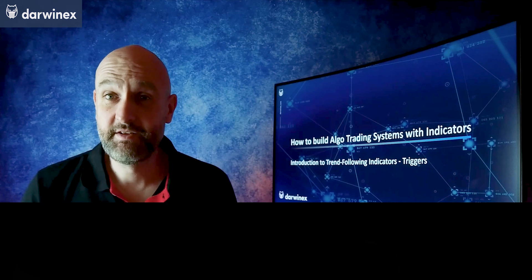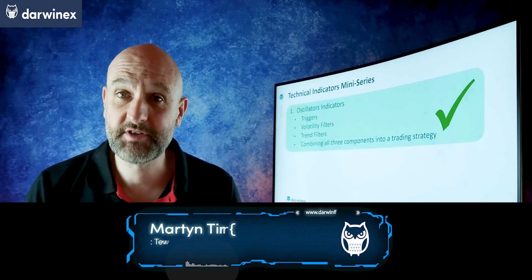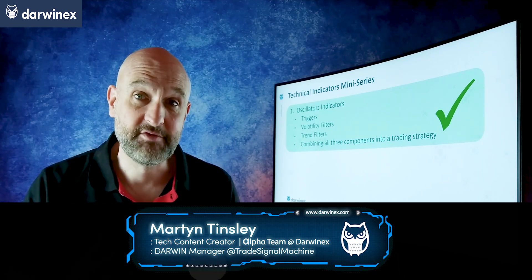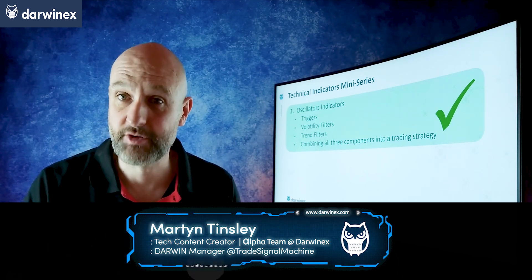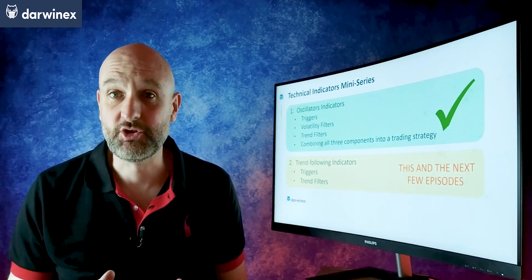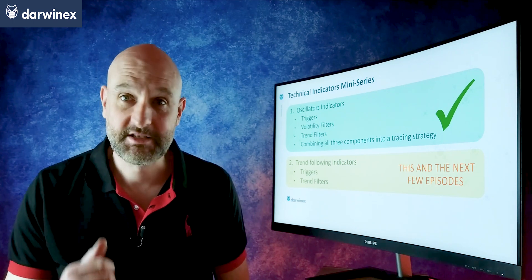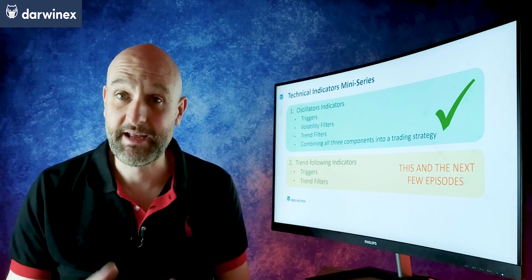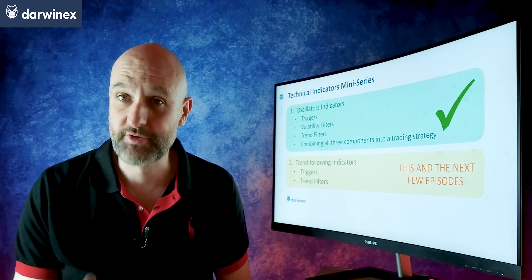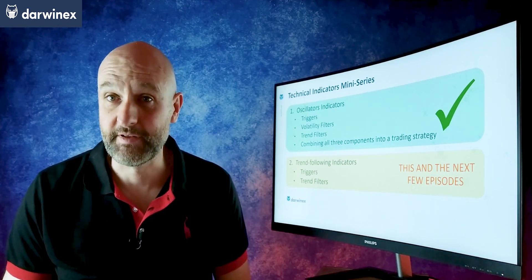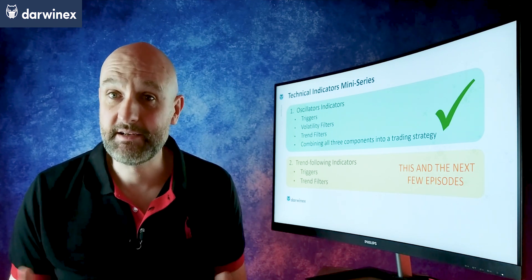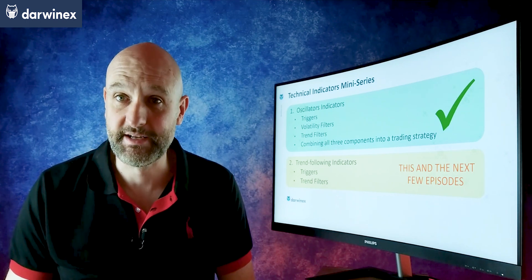As mentioned in the introduction, we've spent a lot of time looking at oscillators and how these can be used to give us information about triggers, trend filters, and also volatility filters. But now we move our attention to trend following indicators. Specifically, over this episode and the next few, we'll look at how to use these for triggers and also for trend filters, giving us other options as we combine components to build trading systems.